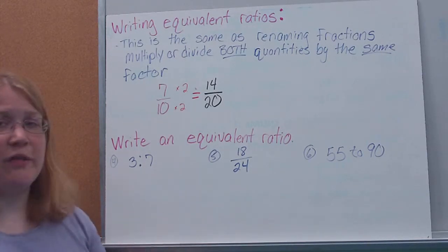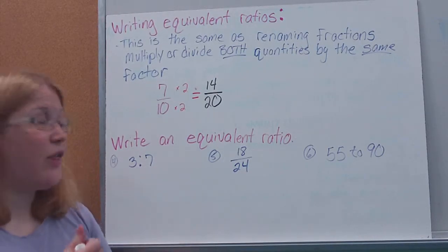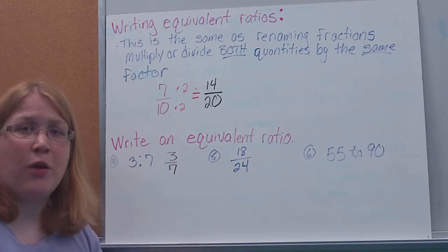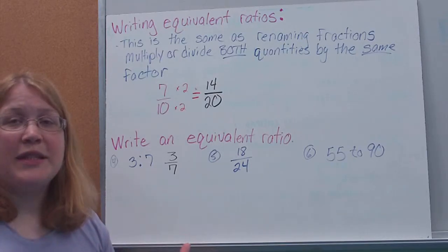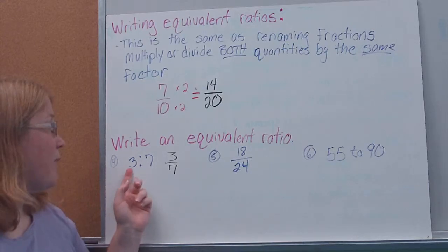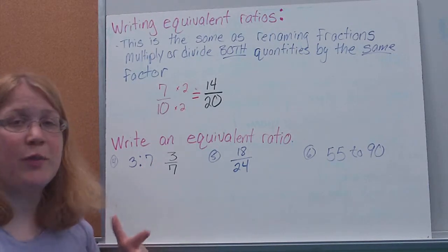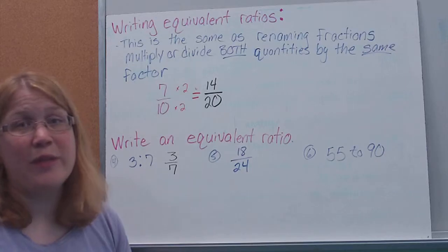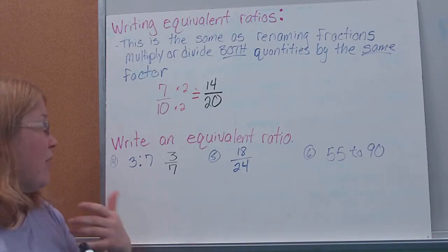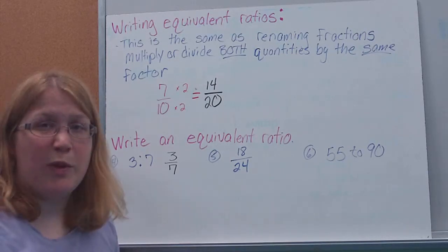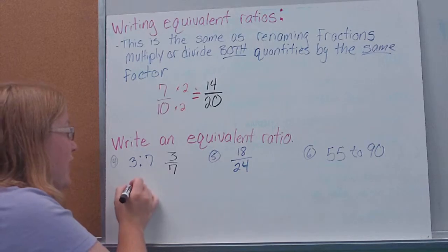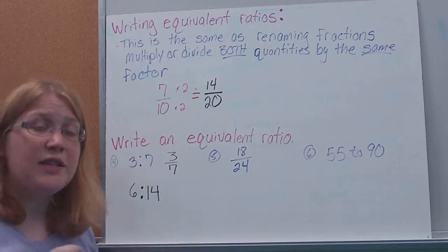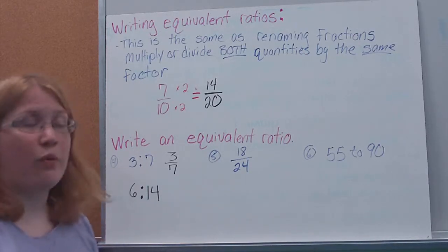Here we'll just practice. We're going to write an equivalent ratio. Here you'll notice I've written this in ratio form. If that throws you off, feel free to rewrite it as the fraction form. But the same principle applies whether I write it this way or this way. I can do whatever I want to one number. I can multiply it by any number, as long as I multiply the other one by the same number. Remember, we can only multiply or divide. You can't add or subtract, that's not going to make it the same. I know I can't reduce this because they don't have a common factor. So I'm going to make it easy on myself. I'm just going to multiply by 2 because multiplying by 2 is easy. If I multiply 3 times 2, I get 6. If I multiply 7 by 2, I get 14. So 6 to 14 is an equivalent ratio to 3 to 7.